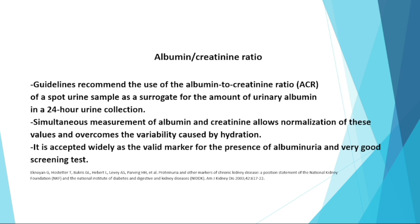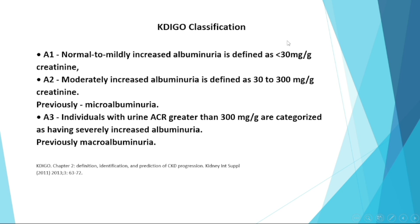For albumin-to-creatinine ratio, the guidelines recommend using the spot urine albumin-to-creatinine ratio as a surrogate for 24-hour urine albumin. Simultaneous measurement of albumin and creatinine allows normalization of the value, overcoming variability caused by hydration status. It is widely accepted as a valid marker of albuminuria and a very good screening test.